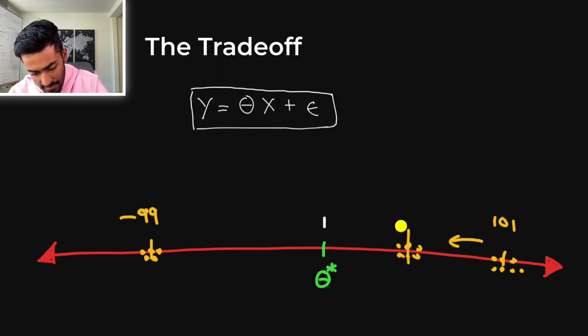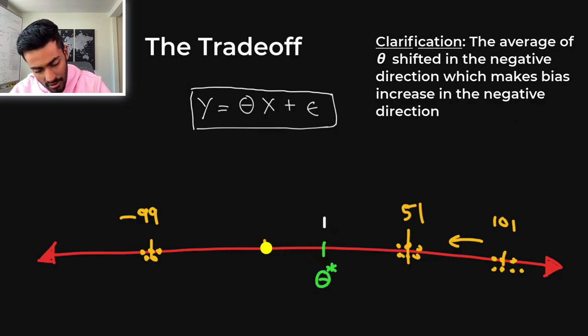Now, what happened here is that the variance between these data points has decreased. But the bias itself has shifted from one to maybe somewhere over here. And so though we saw a decrease in variance, we now have an increase in the absolute value of the bias.